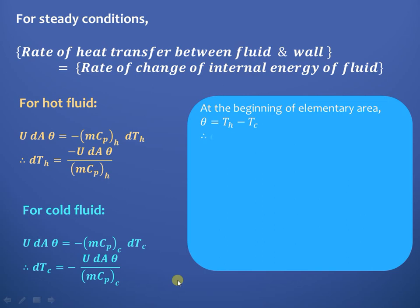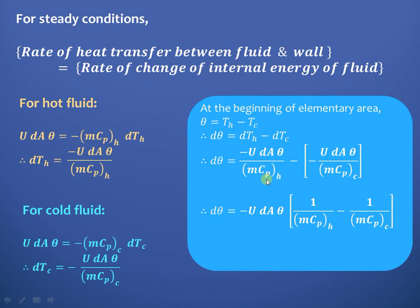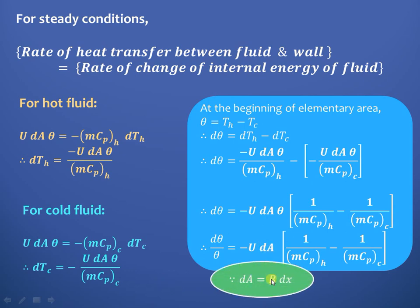At the beginning of the elementary area, theta = T_h - T_c. Taking the differential on both sides: d-theta = dT_h - dT_c. Substituting the expressions for dT_h and dT_c, we get d-theta = -U·dA·theta·(1/mCp_h - 1/mCp_c). Separating variables gives d-theta/theta = -U·dA·(1/mCp_h - 1/mCp_c). The elementary area dA is expressed as width b times elementary length dx, so dA = b·dx.